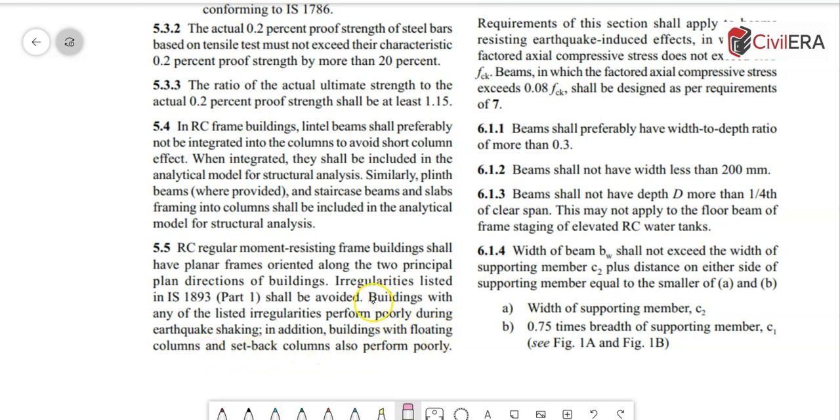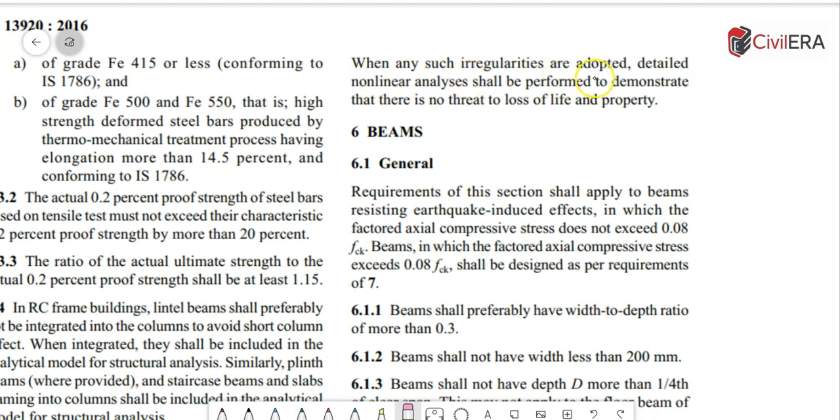When any such irregularities are adopted, detailed non-linear analysis shall be performed to demonstrate that there is no threat to loss of life and property. So these two clauses make it really clear that floating columns are undesirable, but then you can use that as a gravity column ensuring that you have alternate load paths.